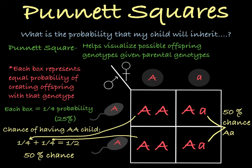As you can see in this Punnett square, there is no possible way for this couple to have a child with the little a, little a genotype, because this child would need to receive a little a from the father and a little a from the mother. But the father does not have a little a in his genome — he can only give a big A to his children.